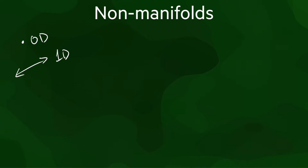Now let's look at the second special case: non-manifold objects. A manifold is a shape that is homeomorphic to the Euclidean space of a particular dimension. So that would be a point in 0D, the line in 1D, the plane or 2D space in 2D, and 3D space in 3D.